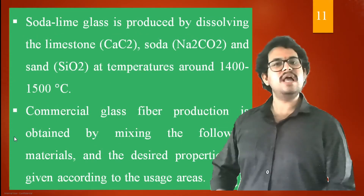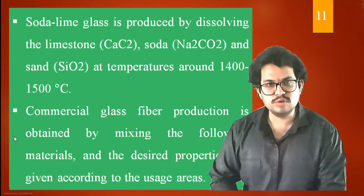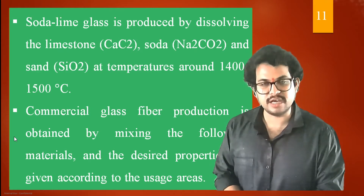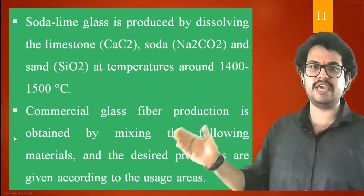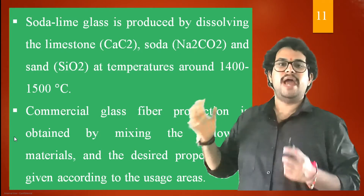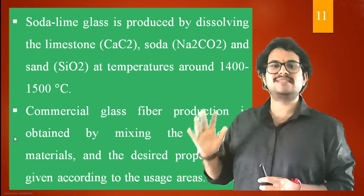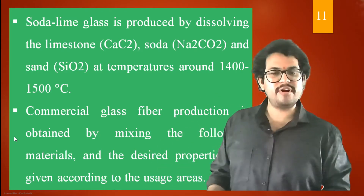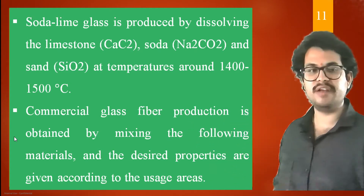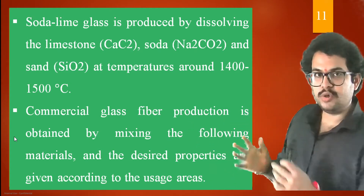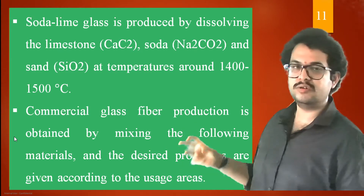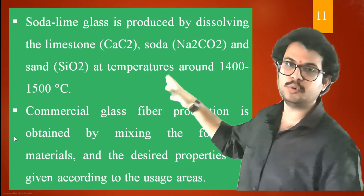The soda lime glass is produced by dissolving limestone, calcium carbide (CaC2), soda, and sand at temperatures ranging from 1400 degrees centigrade to 1500 degrees centigrade. In this temperature range we mix those components to have a soda lime glass prepared.